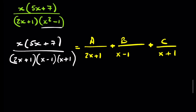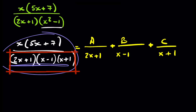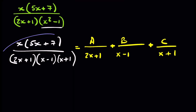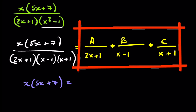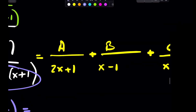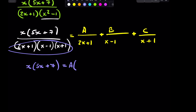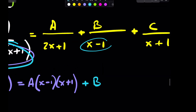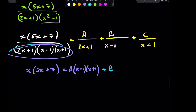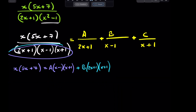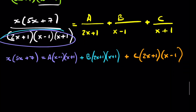We multiply the entire left-hand side by the full denominator, which cancels it out, leaving 5x+7. On the right, multiplying A by all three factors means the (2x+1) term cancels, leaving A(x−1)(x+1). For B, the (x−1) term cancels, leaving B(2x+1)(x+1). For C, the (x+1) term cancels, leaving C(2x+1)(x−1).